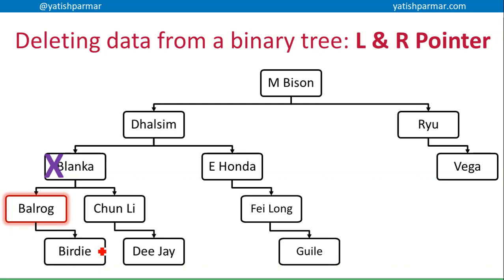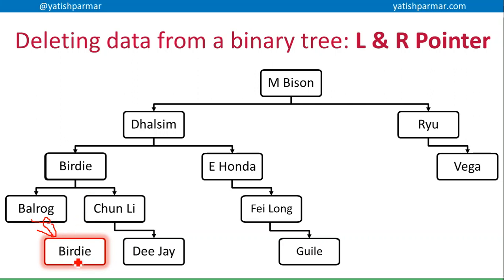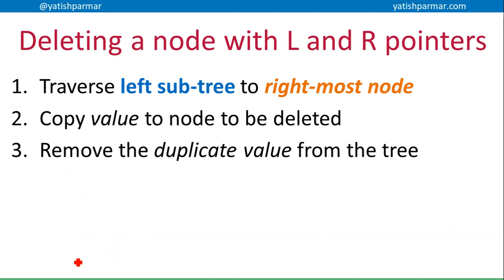I'm going to go for the maximum value on the left-hand side to get the next smallest value. So I'm going to get rid of Blanca, and I found Birdie as being the next smallest value. I'm going to copy Birdie's value up to Blanca's node, keeping all the pointers the same to save hassle. Then I need to remove the duplicate value from the tree by changing the pointer of Birdie's parent so it no longer points to Birdie, because otherwise I'd end up with a duplicate value.